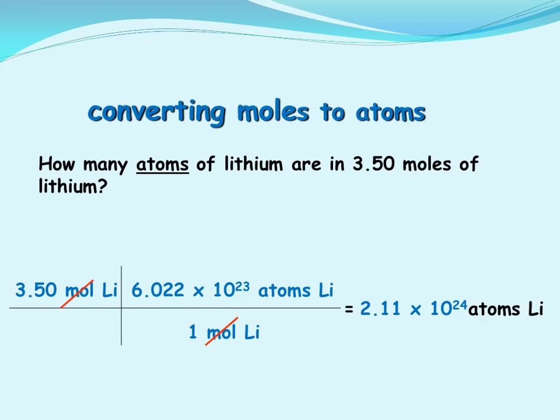Using Avogadro's number, we can convert from moles to number of atoms of an element. It asks, how many atoms of lithium are in 3.50 moles of lithium? 3.5 moles is our given information. We use Avogadro's number, 6.02 times 10 to the 23rd atoms per mole, as our conversion factor and set it up so that moles and moles cross-cancel.